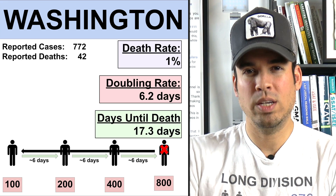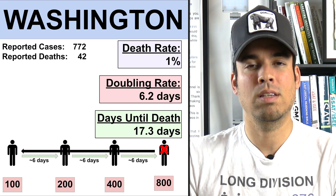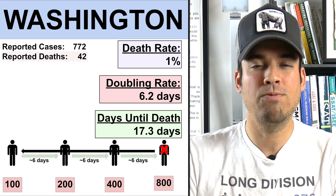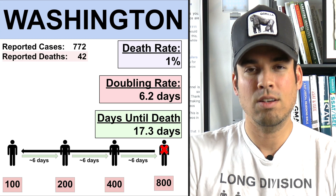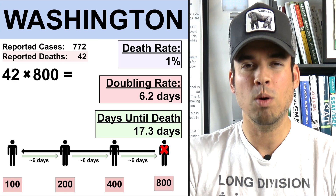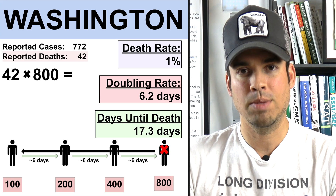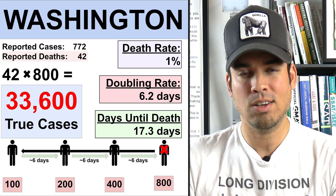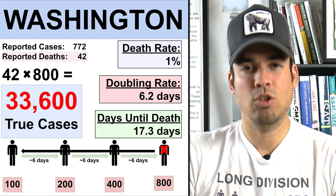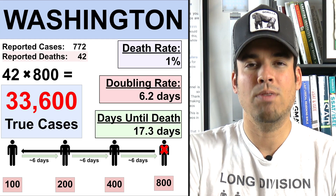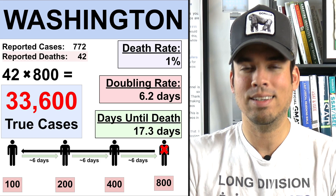Using this math, we can approximate the number of active cases based on the most current figures, which is 42 deaths resulting from COVID-19 in Washington. We take that number of deaths — 42 — multiply it by 800, and we get a rough estimate of 33,600 active cases in the state of Washington. This assumes those 42 deaths happened roughly at the same time, which of course they didn't — those deaths were staggered. But the point is that what is being reported is likely massively on the lower end of the spectrum in terms of active cases.